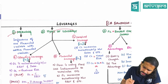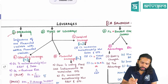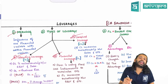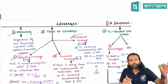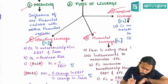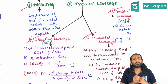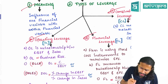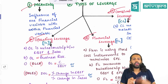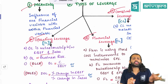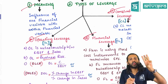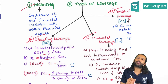There are three types of leverages: operating leverage, financial leverage, and combined leverage. Operating leverage measures the relationship between sales and EBIT. Operating leverage is also known as business risk.